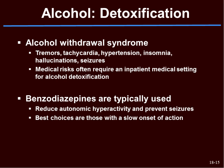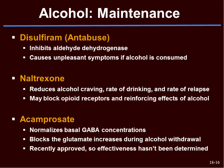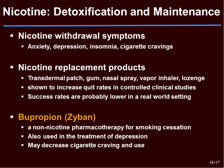Alcohol withdrawal syndrome includes tremors, tachycardia, hypertension, insomnia, hallucinations, and seizures — it's really dangerous and you need to be in an inpatient medical setting. Benzodiazepines are often used to reduce autonomic hyperactivity and prevent seizures. For maintenance we can use antabuse, naltrexone to reduce alcohol craving and rates of drinking, and acamprosate which normalizes basal GABA concentration — though the first two are used most commonly.